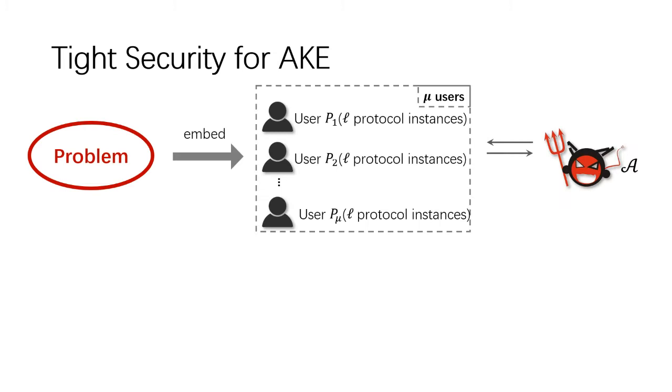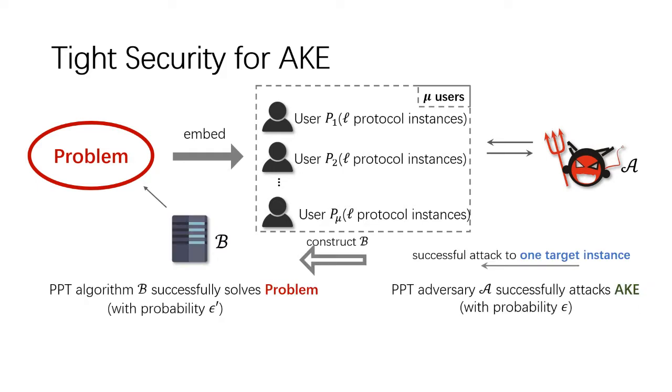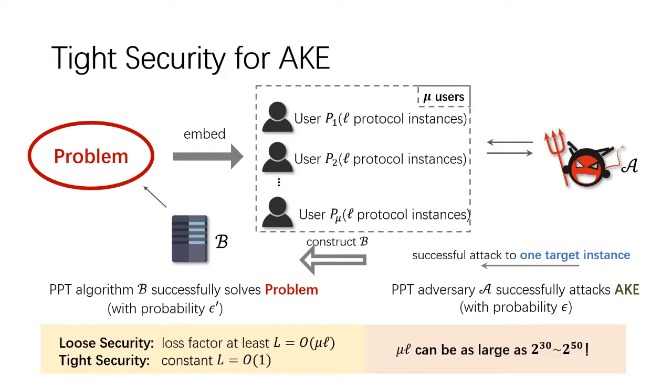Usually, AKE is deployed in the multi-user and multi-session setting. That is, there are mu users, and each user involves at most l protocol instances. We say the adversary wins if it successfully attacks one target instance among all mu l instances. Many AKE schemes have a loose security, namely a loss factor at least of mu l. In practice, mu l can be as large as 2^30 to 2^50. As mentioned above, tight security enjoys its own advantages. Therefore, it's important to pursue the tight security of AKE.